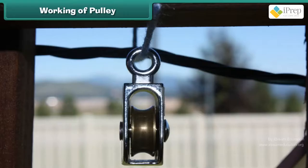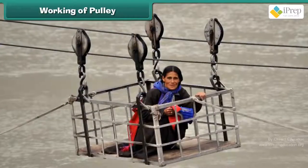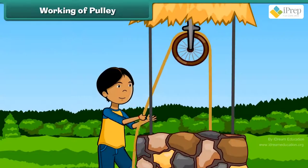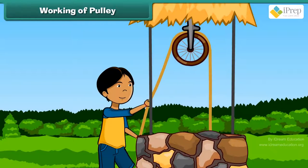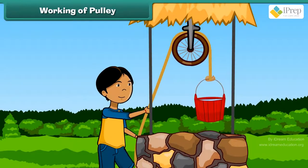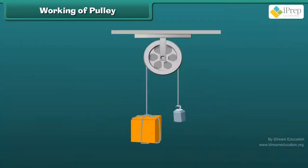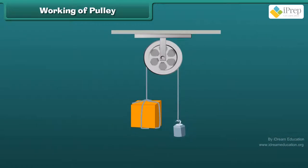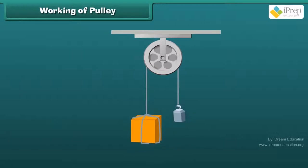A pulley helps the trolley to cross a river. A pulley is used to lift heavy loads. With a pulley, an object to be lifted can be tied to one end of the rope and a force is applied to the other end.